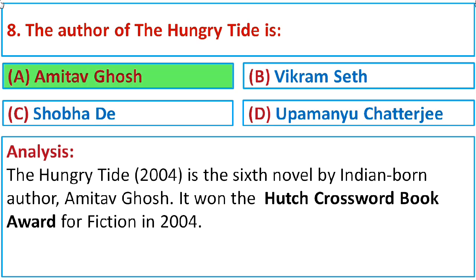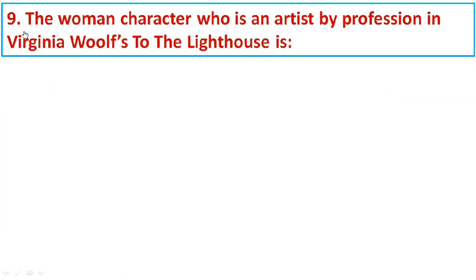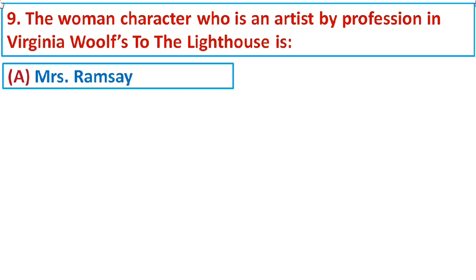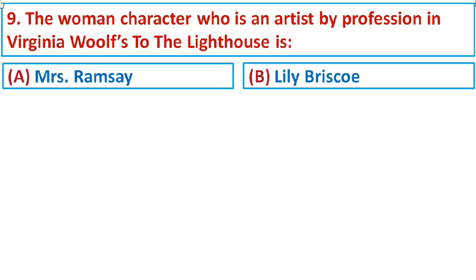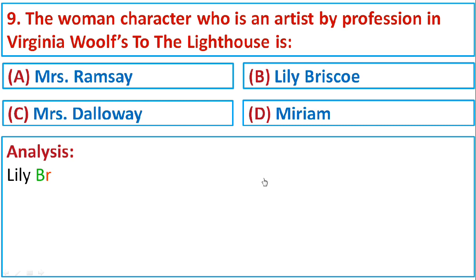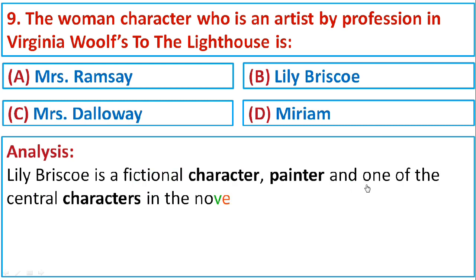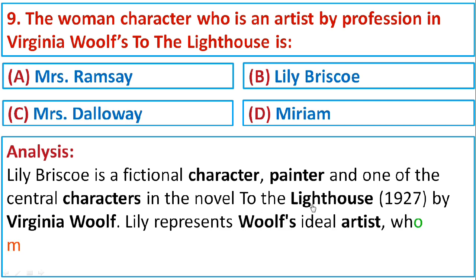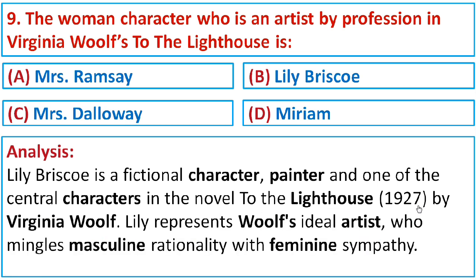Question number nine: The woman character who is an artist by profession in Virginia Woolf's To the Lighthouse is Option A: Mrs. Ramsay, Option B: Lily Briscoe, Option C: Mrs. Dalloway, or Option D: Miriam. Lily Briscoe is a fictional character, a painter, and one of the central characters in To the Lighthouse, published in 1927 by Virginia Woolf. Lily represents Woolf's ideal artist who mingles masculine rationality with feminine sympathy. The correct option is B: Lily Briscoe.